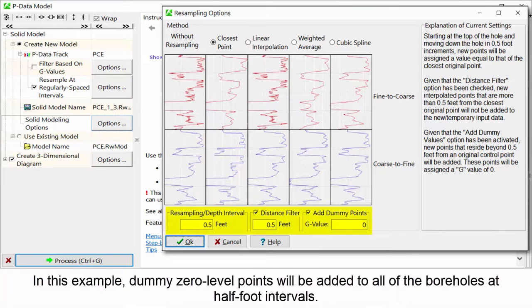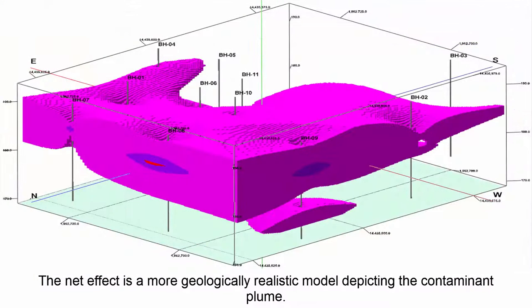In this example, dummy zero-level points will be added to all of the boreholes at half-foot intervals. The net effect is a more geologically realistic model depicting the contaminant plume.